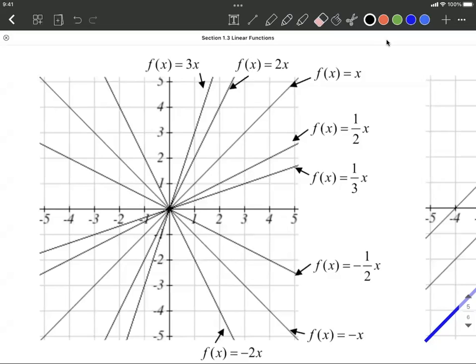A couple quick examples. We just want to take a look at this and think basically what different slopes are going to affect a line.